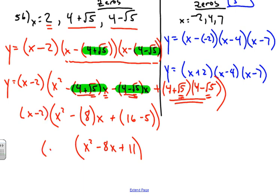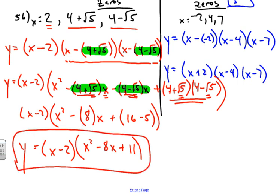So we have x squared minus 8x plus 11, and if you want you could multiply through by x minus 2 to get a full cubic expression, but we'll leave it in factored form as our solution. Given zeros, you can create any polynomial of any degree just by creating a product of linear factors from the given zeros. Hope this helps you on how to write a polynomial equation given zeros. Good luck and God bless.